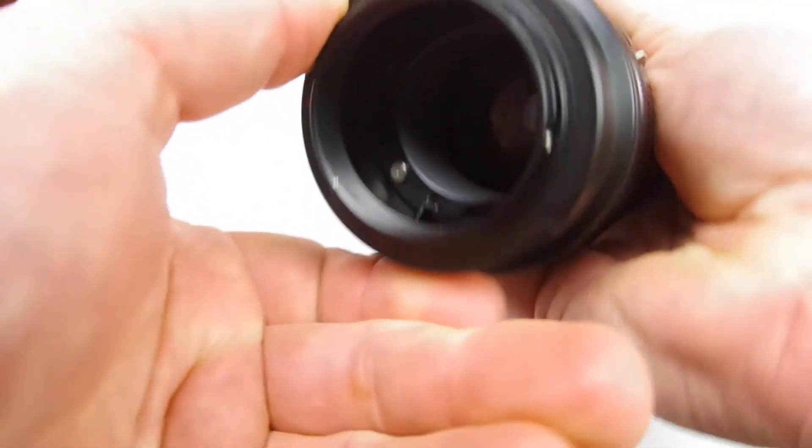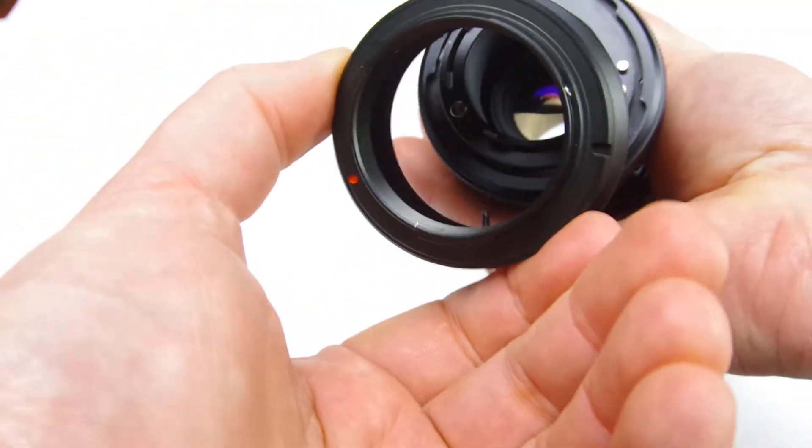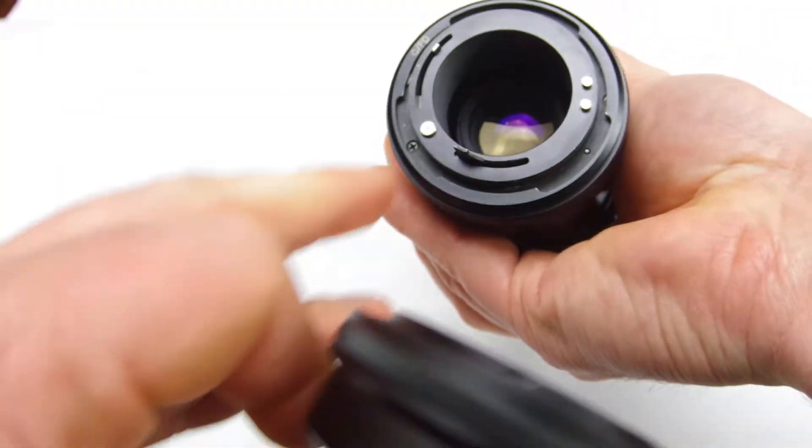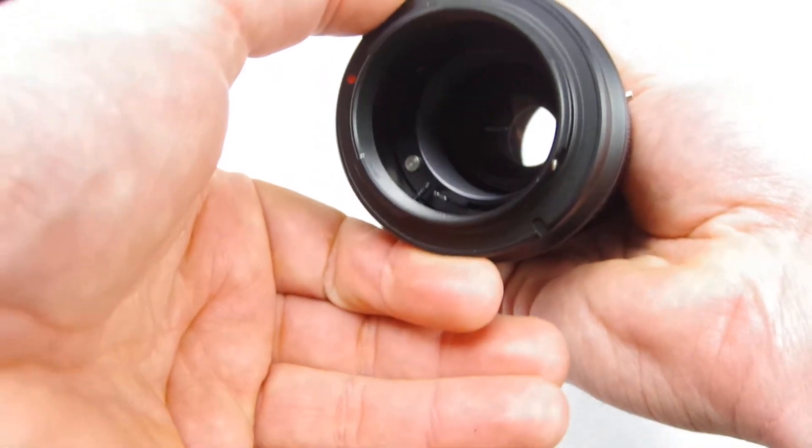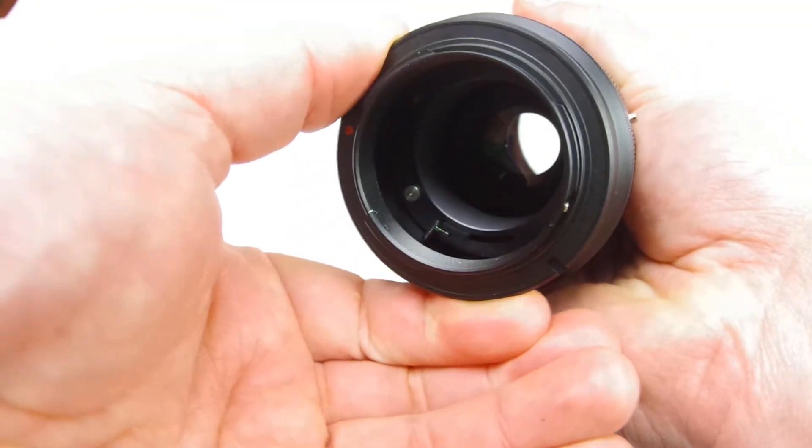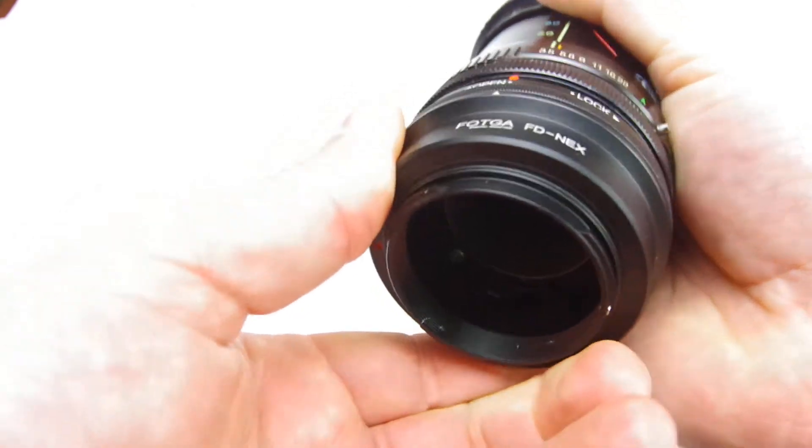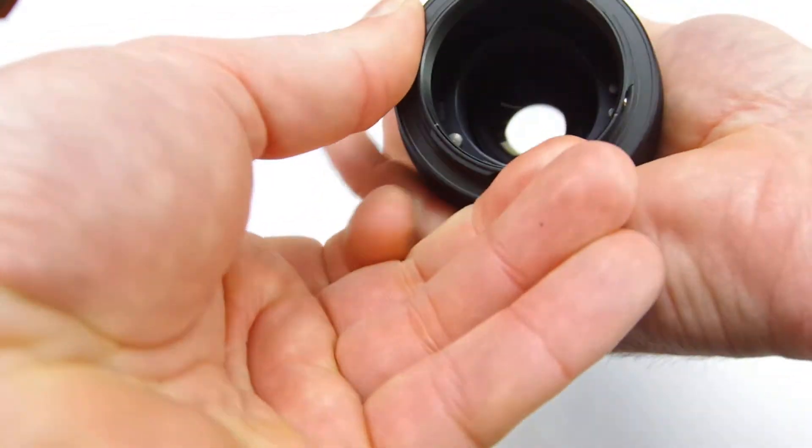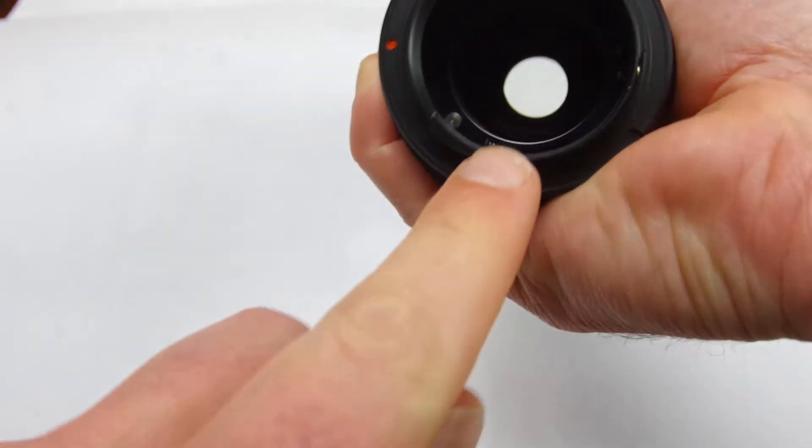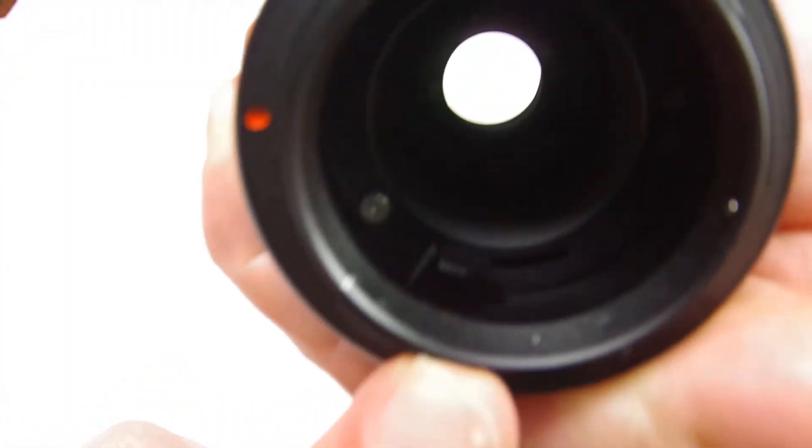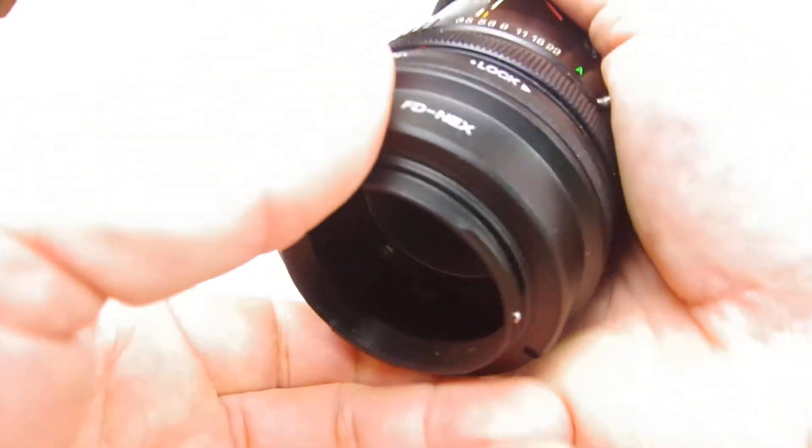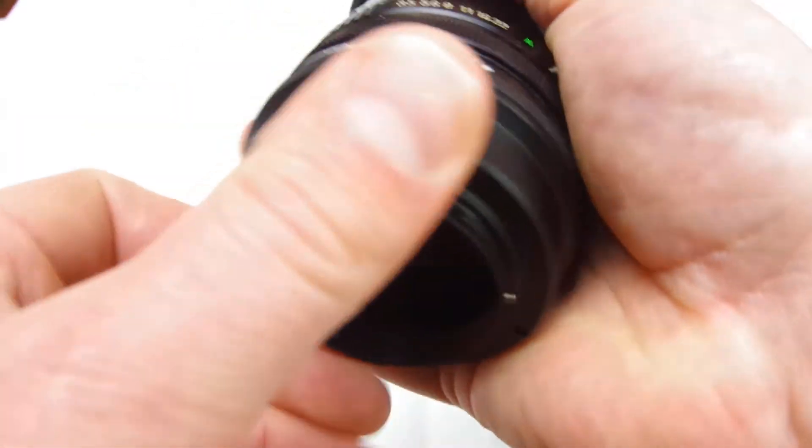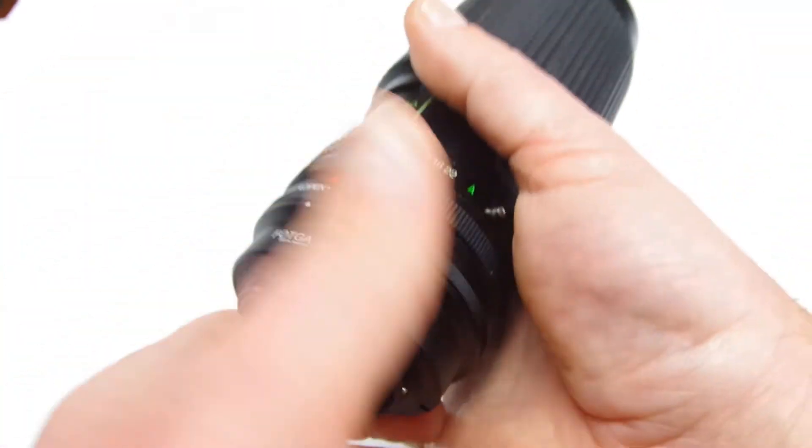When you're pressing in, you want to look at this pin here on the back. You want to be kind of behind it, so slightly turn it until it clicks in. It clicks in when it's behind that pin. If you notice, can you see that in there? It's kind of hard to see. Yeah, there it's behind that pin.